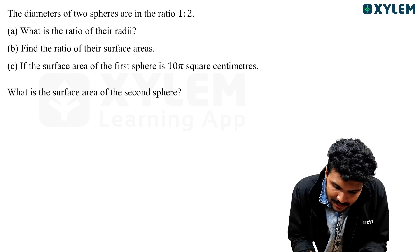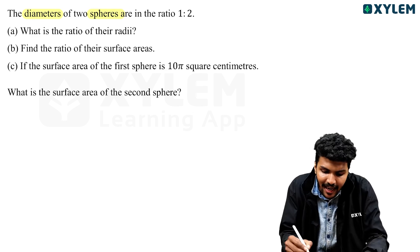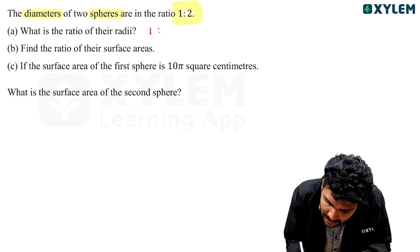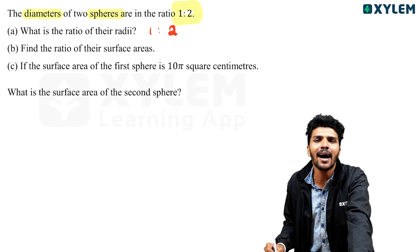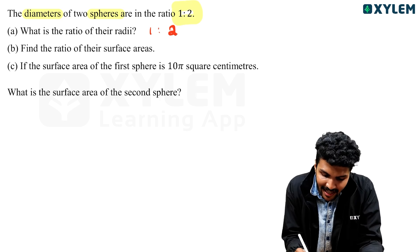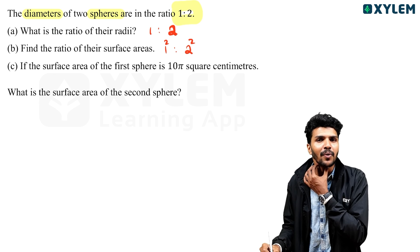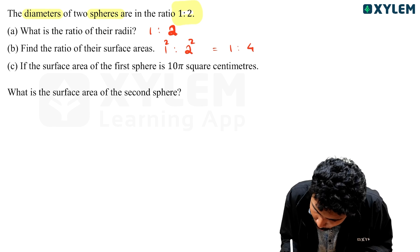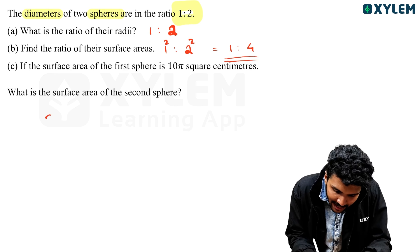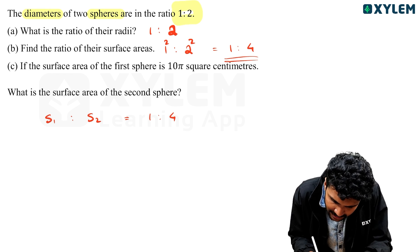One question: the diameter of two spheres is in ratio 1 is to 2. So the radius ratio is also 1 is to 2. Find the total surface area ratio. Since surface area is 4 pi r square, the ratio between radii squared gives 1 squared is to 2 squared, which is 1 is to 4.